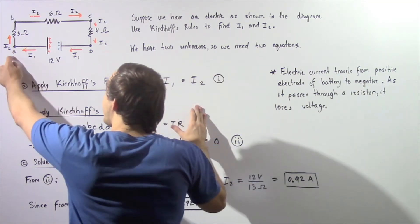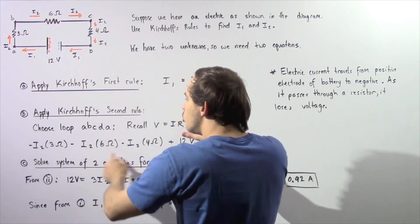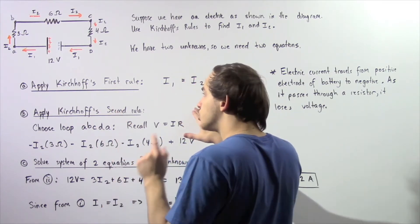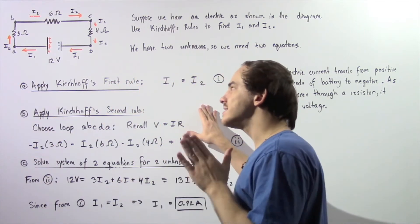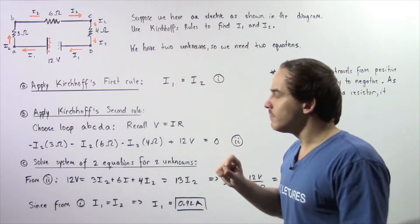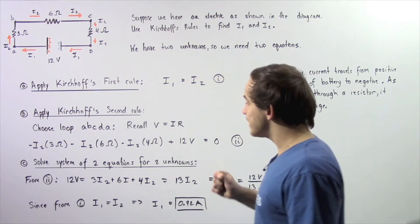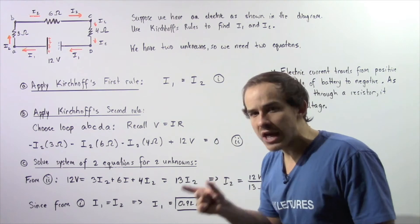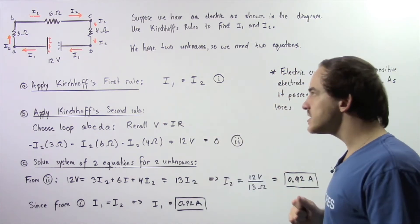We choose our loop to be A, B, C, D, A — a closed loop that begins at initial point A and ends at that same point A. Recall that the voltage drop across any resistor is given by Ohm's law: the product of the electric current through that resistor and the resistance of that resistor.